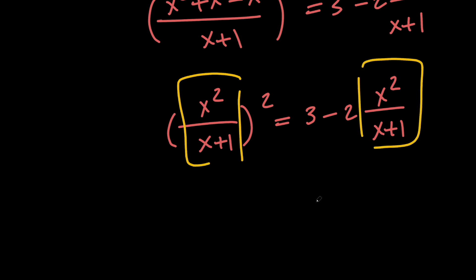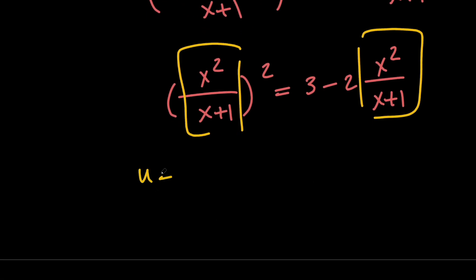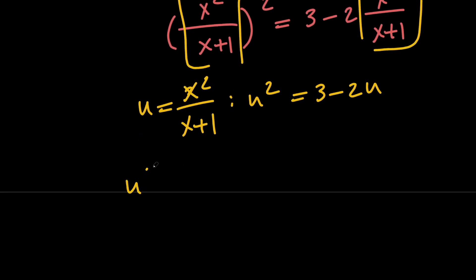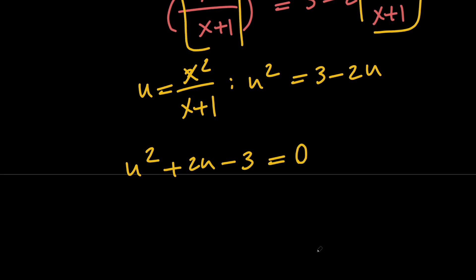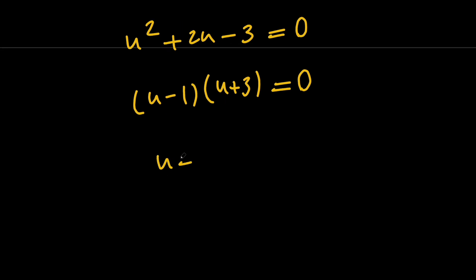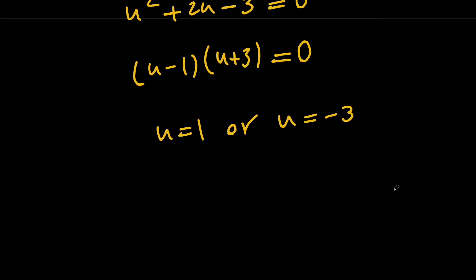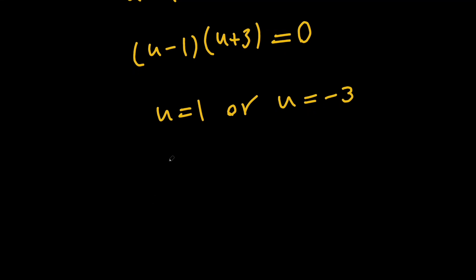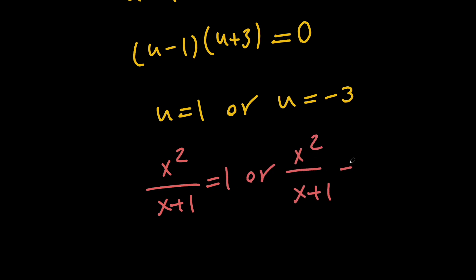Now you can see that by doing what we did, we got the same expression appearing in both places, so we can use the substitution method. Let's say that u equals x squared over x plus 1. By doing this replacement, we get u squared equals 3 minus 2u, which means that u squared plus 2u minus 3 equals 0. The left hand side factors as u minus 1 times u plus 3, which means that u equals 1 or u equals negative 3.